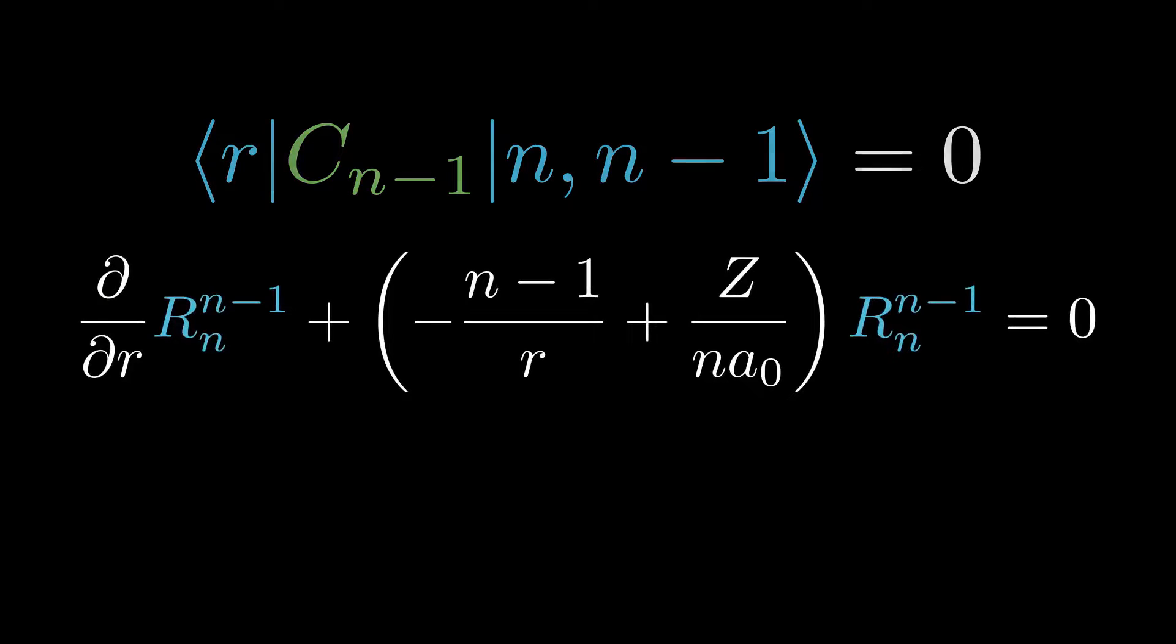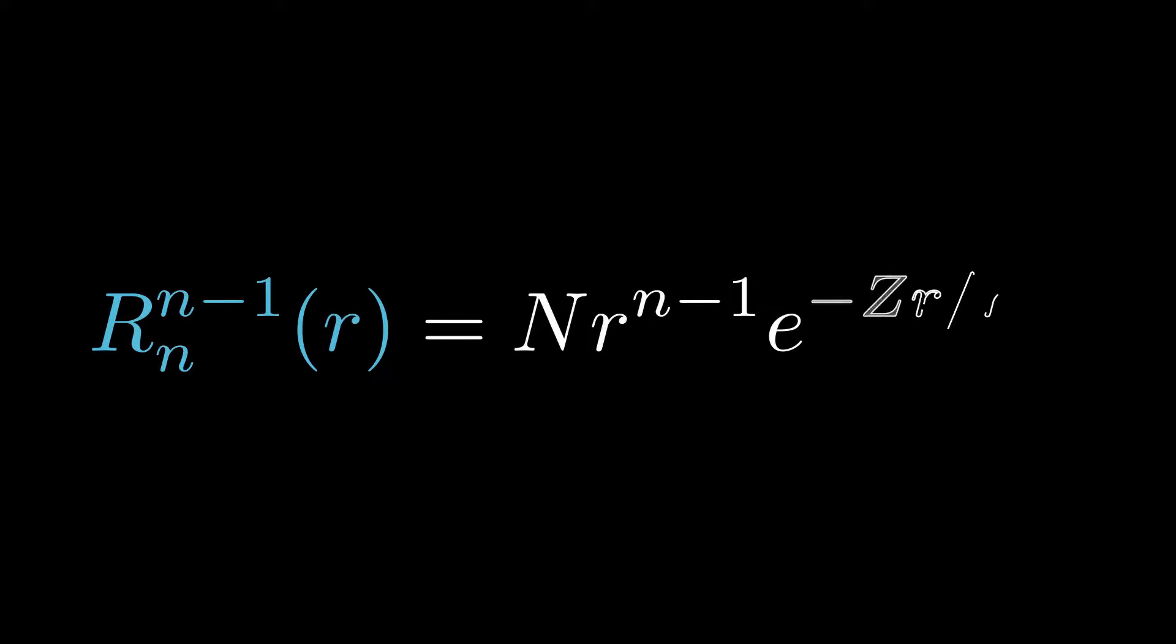I'll leave it to you to verify the solution. The solution is this decaying exponential multiplied by r to some integer power where n is a normalizing constant of no interest to us.